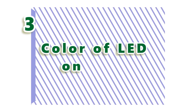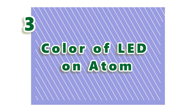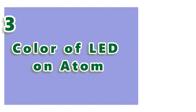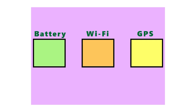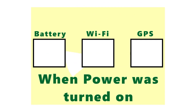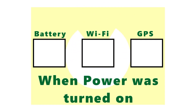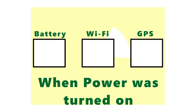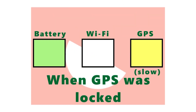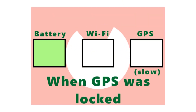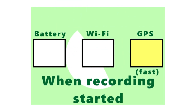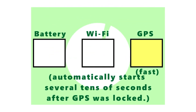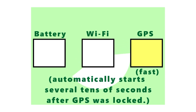Once turned on, the status LEDs of the Atom begin to flash. There are three LEDs: a green LED for power, an orange LED for Wi-Fi, and a yellow LED for GPS. The green power LED will begin to slowly blink. Once GPS is locked, the yellow GPS LED begins to slowly blink. After about 5 to 30 seconds of having GPS lock, data begins to be recorded and the yellow GPS LED will blink rapidly.